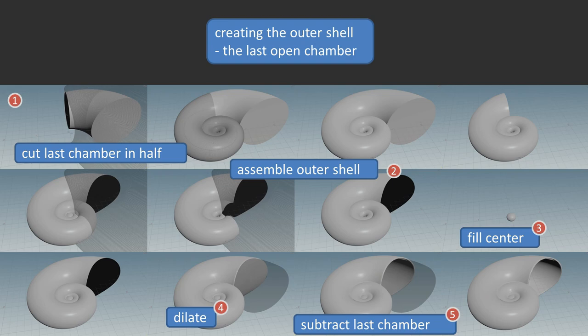Now, we also need the outer shell that also includes the last open chamber. When creating the chambers, I made sure the last chamber is double the length that is shown in the end. As I don't want a simple straight flat cut to the end, the last chamber gets cut in half with a nice banded cutter. A little sphere is added to fill the center gap. From the resulting shape, the last chamber gets subtracted.